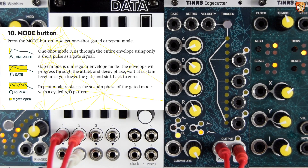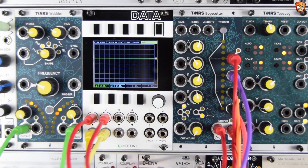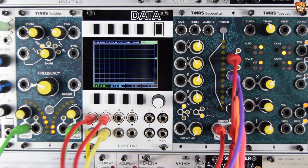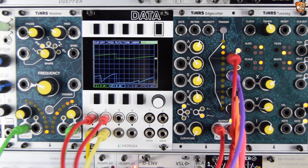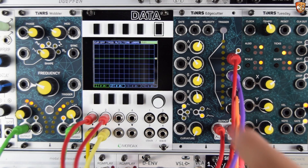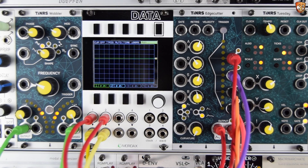So those are the three modes: triggered one-shot, gate-dependent, and looping. In this bigger patch we're using the stage outputs to control other things. The linear shape — the green trace — is controlling the wave shape of a wavetable oscillator that's droning into a reverb. The curvature output — the blue trace — is opening a VCA with a lower-pitched sub wave.